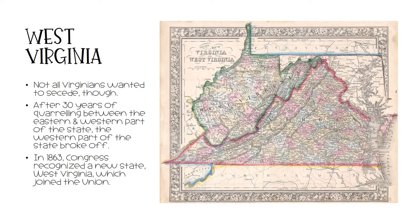Not all Virginians were happy with the decision to secede from the Union. After 30 years of quarreling between the eastern and western parts of the state, the western part decided to break off. In 1863, Congress recognized a new state, West Virginia, which joined the Union.